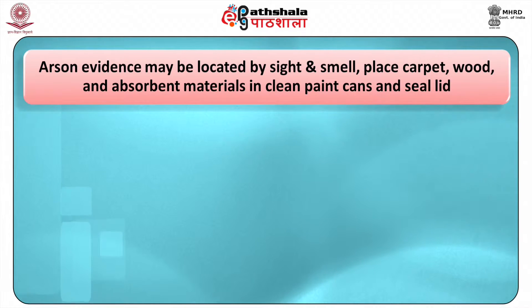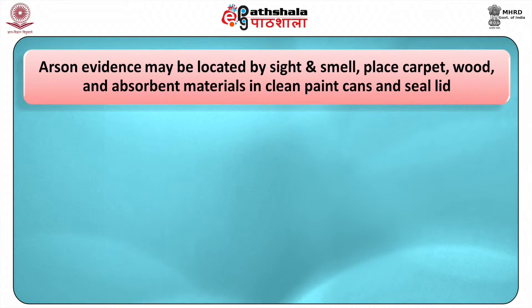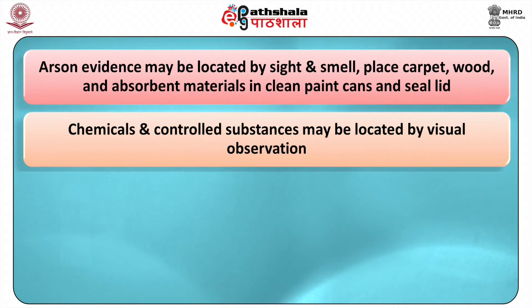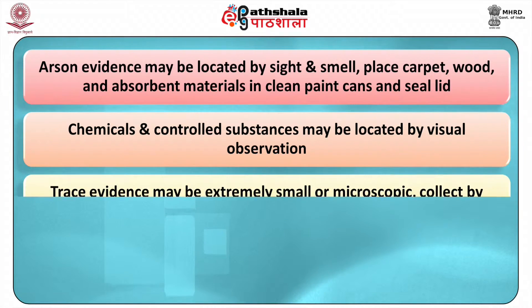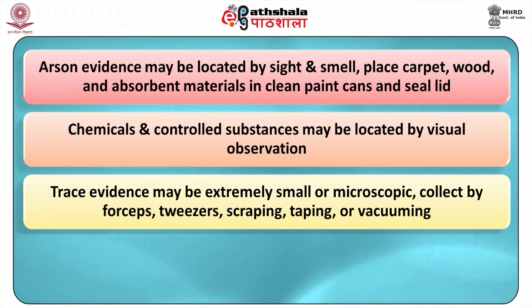Arson evidences such as flammables and ignition sources may be located by sight and smell. Place carpet, wood and absorbent materials in clean paint cans and seal the lid. Place flammable liquids in a glass bottle with tight fitting lid. Chemicals and controlled substances such as drugs may be located by visual observation; chemical field tests are used to classify or identify them at the scene of crime. Trace evidences such as hair, fibers and soil may be extremely small or microscopic and should be collected using forceps, tweezers, scrapping, taping or vacuuming.